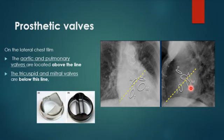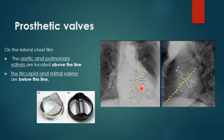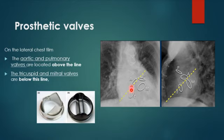On the PA view, draw a line from the left atrial appendage toward the right cardiophrenic recess. The valve above this line is the aortic, with its orifice directed toward the ascending aorta. The valve below is the mitral, with its orifice directed toward the apex. The tricuspid is variable but usually more to the right side, more inferior, and often overlaid by the vertebral bodies. The pulmonary is the most superior and most superficial.